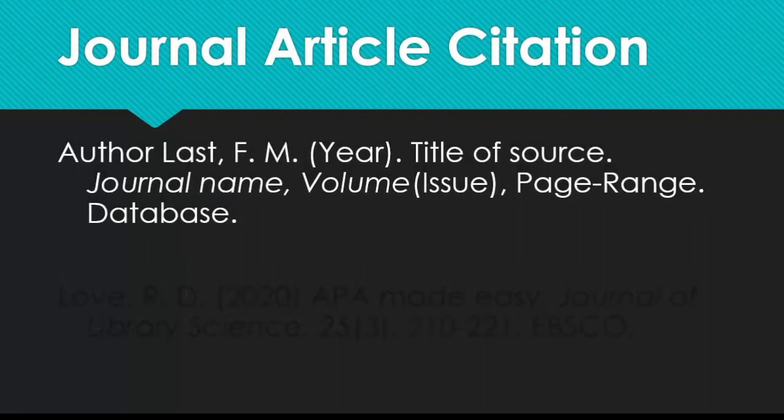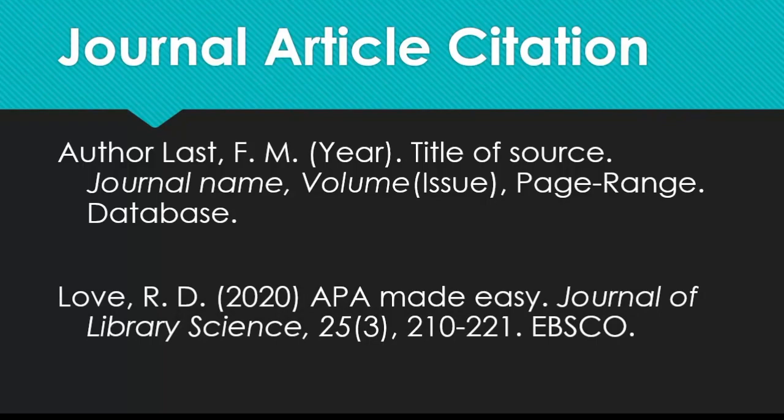An article published in a journal, newspaper, or magazine will include the following. The author's last name and initials, followed by a period. Then the publication year in parentheses, followed by a period. Then the title of the article, again with only the first word, proper nouns, and first word of a subtitle capitalized. Next will be the name of the journal, newspaper, or magazine in italics, followed by the volume — also italicized — and issue number it was published in. The issue number appears in parentheses and is not italicized. Finally, if you found the article online, you'll include a URL, name of the database where you found it, or something called a DOI, or digital object identifier, which is a unique number you can use to find the article.